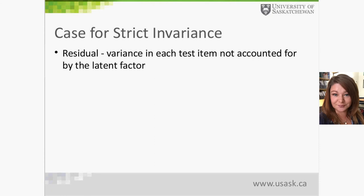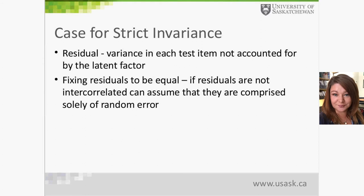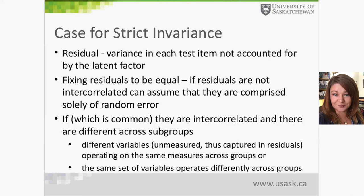Strict invariance constrains everything discussed earlier — two factors, factor loadings, and factor means — and additionally requires constraining the residuals or errors. You need to constrain the variance in each test item that is not accounted for by the latent factor. Some argue you don't need to fix the residuals to be equal, because if residuals aren't intercorrelated you can assume they're just random error. But most residuals are correlated, so this argument doesn't hold much weight.